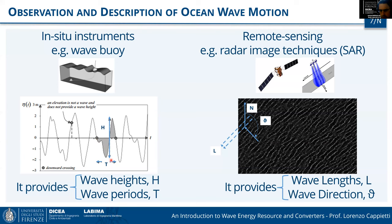The distance between a crest and a trough in the vertical direction is called the wave height, and the distance between two crossing points is called the wave period. In a wave motion we can recognize many different wave heights and many different wave periods.